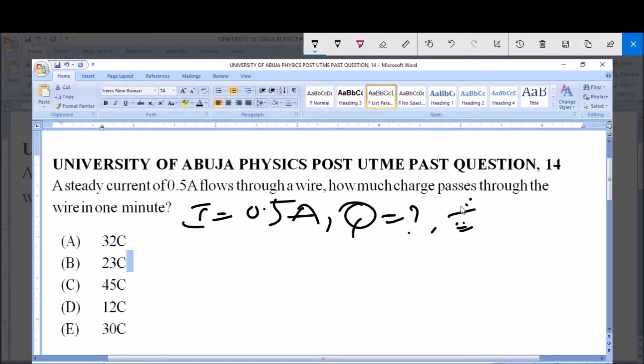Now the time from this question, we are given the time and the time is 1 minute. The standard unit for measuring time is in seconds, so you convert 1 minute to seconds: 1 minute equals 60 seconds. So our time is 60 seconds.